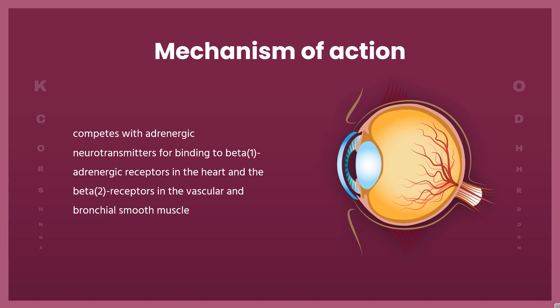The blockade of beta-2 receptors by Timolol in the blood vessels leads to a decrease in peripheral vascular resistance, reducing blood pressure. The exact mechanism by which Timolol reduces ocular pressure is unknown at this time; however, it likely decreases the secretion of aqueous humor in the eye.